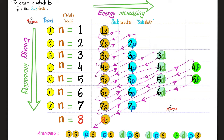The lowest energy is 1S. After 1S comes 2S, then 2P, then 3S, then 3P, then 4S, then 3D, then 4P, then 5S, then 4D, then 5P, then 6S, then 4F, then 5D, then 6P, then 6S — wait — then 5F, 6D, 7P, etc. Why this unusual order? From low energy to high energy — nature loves the low energy states because they are easier to maintain.